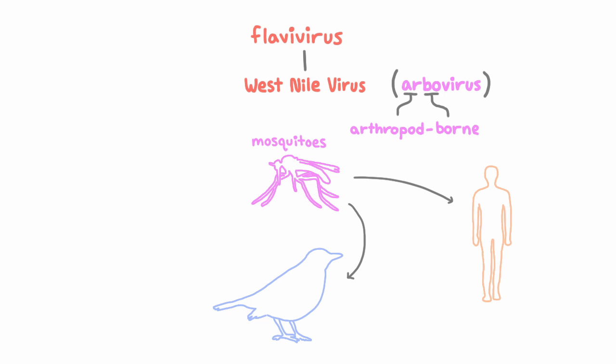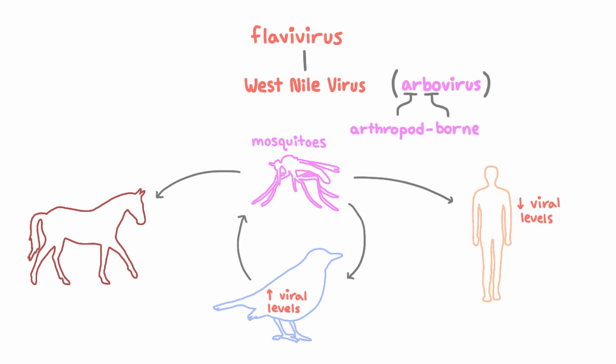Many birds, especially outside the U.S., are great reservoir hosts because they develop really high levels of the virus, so that when another mosquito comes along and bites an infected bird, it can easily pick up the virus. But in humans, the viral levels never get very high, so mosquitoes can't get reinfected from us. So we are what we call dead-end hosts. And horses, it turns out, are also dead-end hosts.